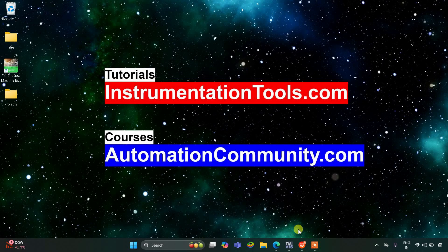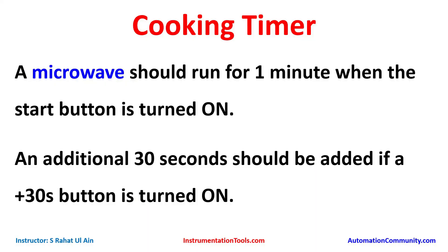Hello everyone, welcome to Automation Community. Today in this video we are going to discuss a cooking timer example. A microwave should run for one minute when the start button is turned on. An additional 30 seconds should be added if a plus-30-second button is turned on. For this example we will use a normally open contact along with timers like TP and TON.